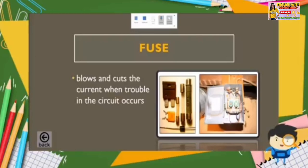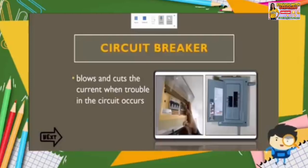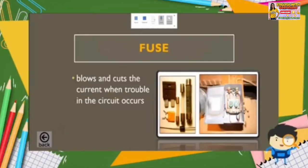The difference with a circuit breaker is: when the circuit breaker has served its purpose, it can be reset — you can use it again. But the fuse, when it blows or cuts the current during trouble or short circuit, you cannot use it again. You have to replace it with a new one.